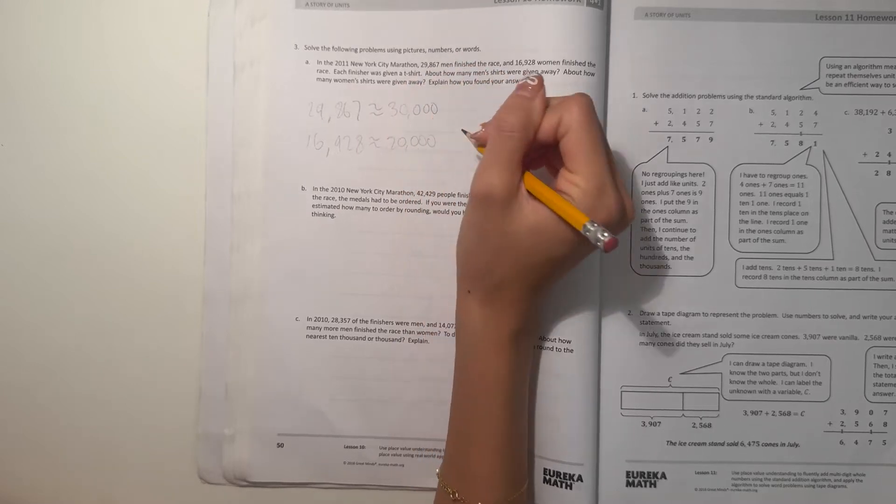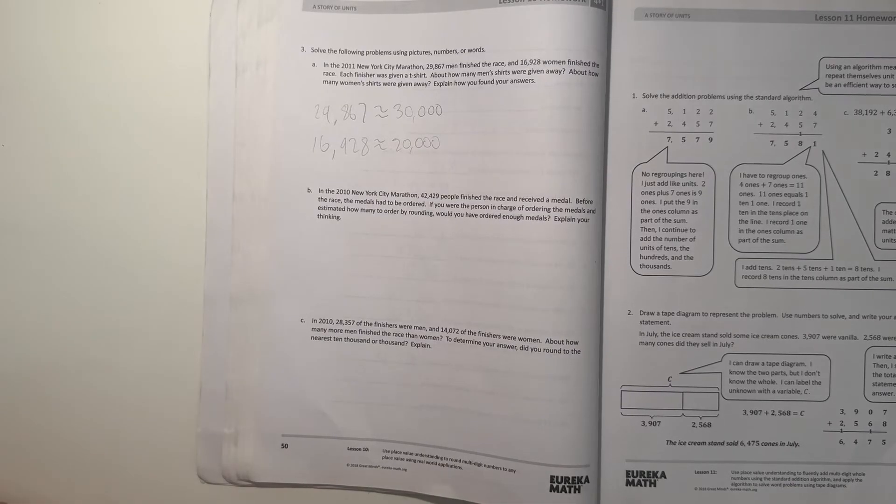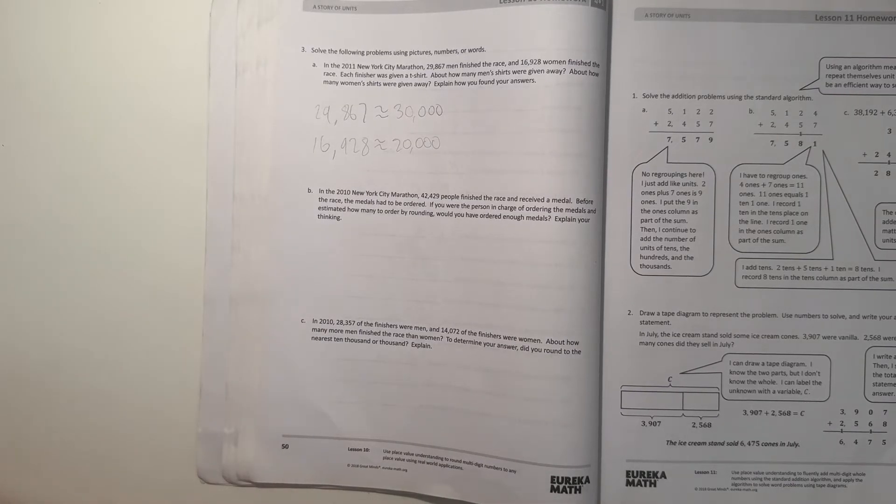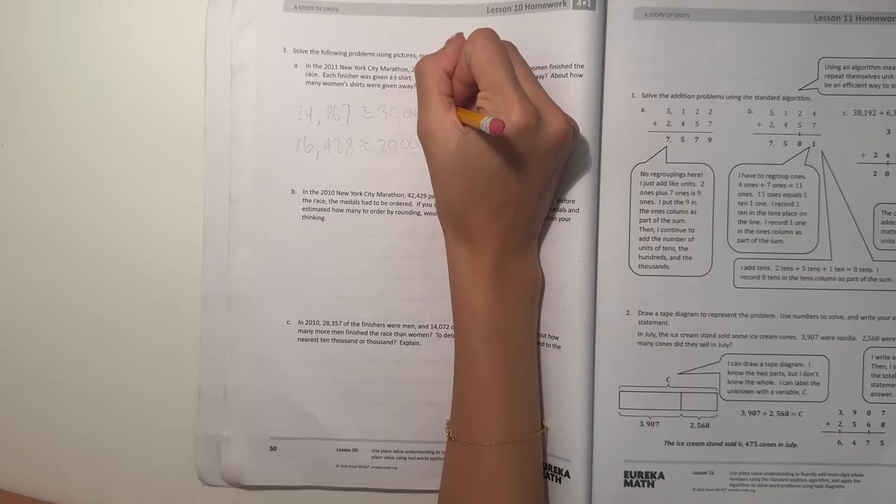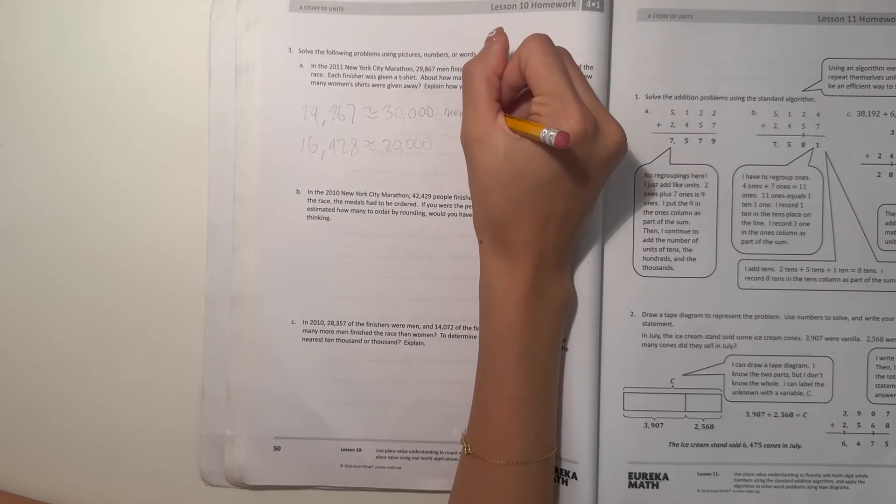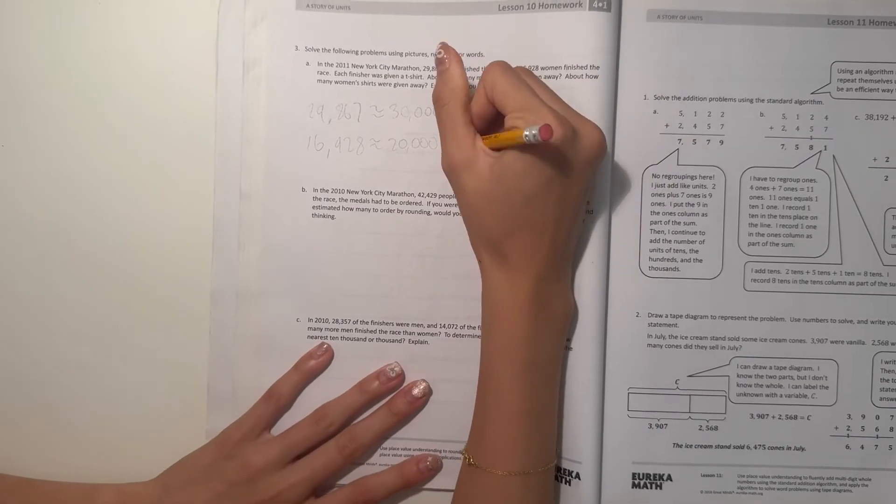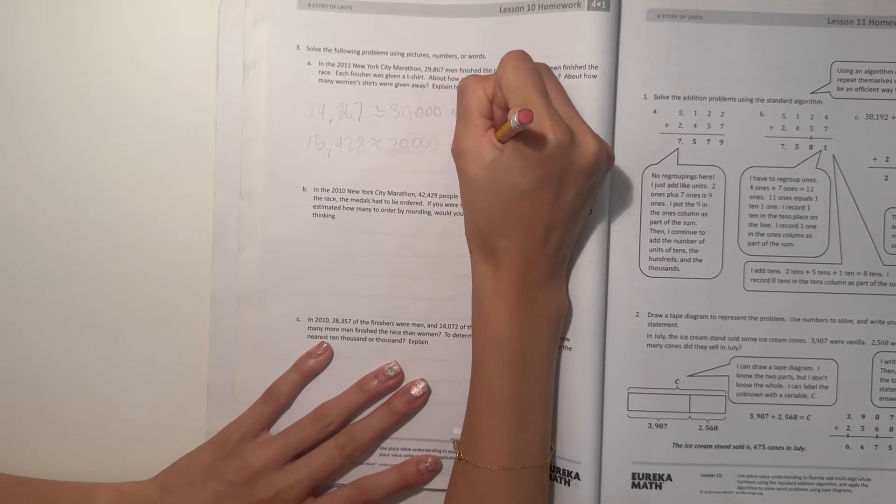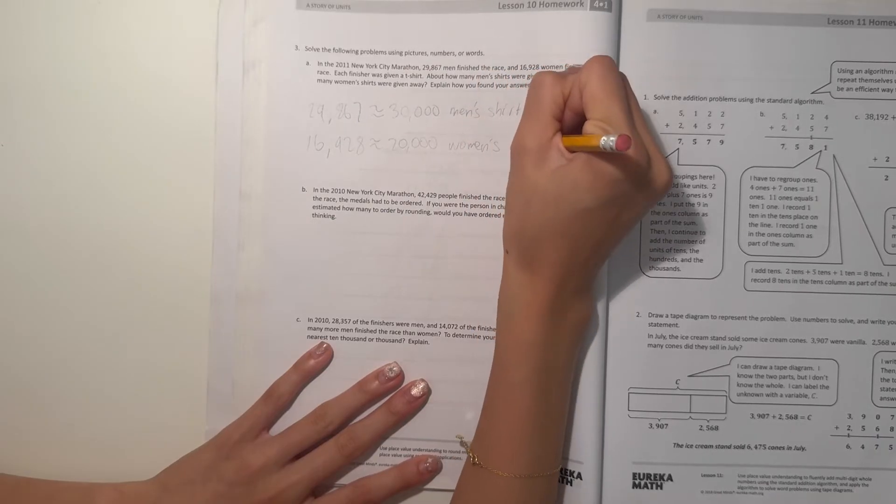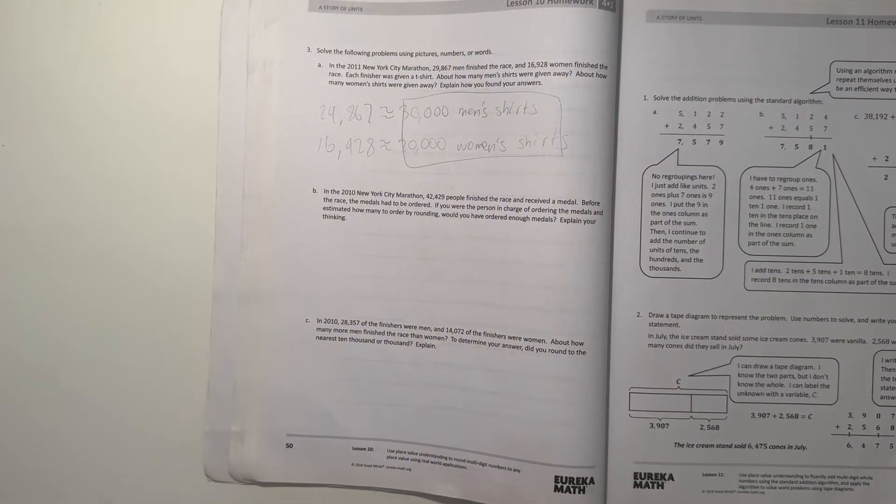If we're rounding by 10,000, because 6 is greater than 5 so we would round up. So 30,000 men's shirts and 20,000 women shirts.